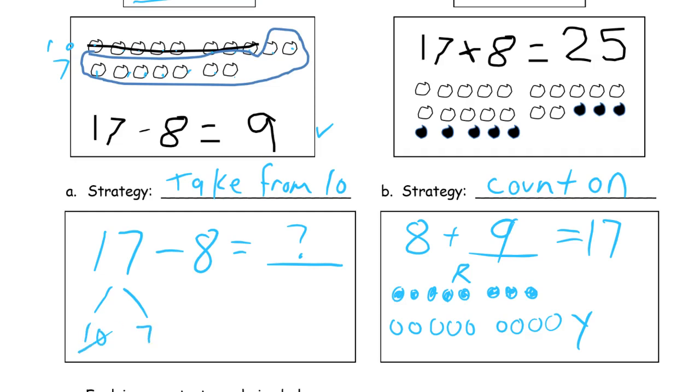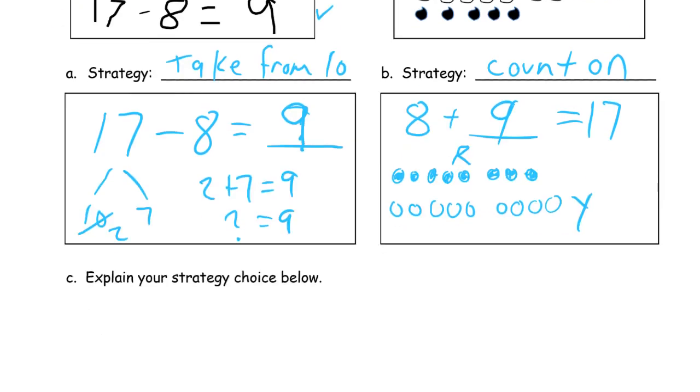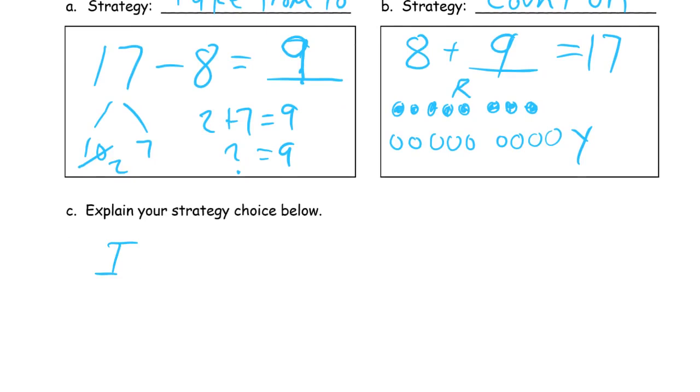This 17 is 10, 7. Right? And then we take 8 from that 10. There's going to be 2 left. 2 plus 7 equals 9. Question mark is 9. Or you can just change this question mark and make it a 9 like that. In this strategy here, this strategy choice, I used take from 10 and then with number bonds.